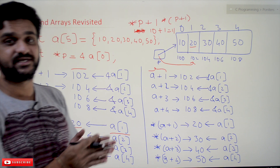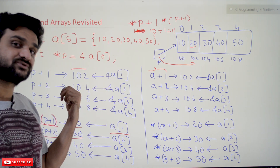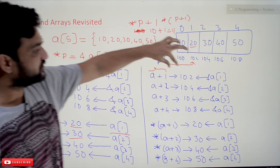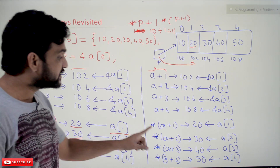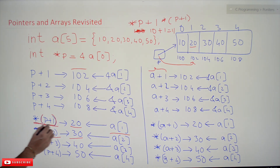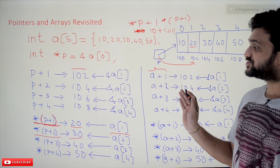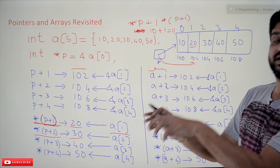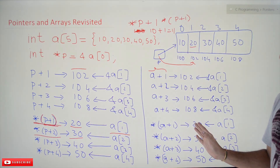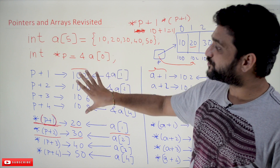The reason pointer arithmetic applies to array names is that an array name is a mnemonic, not a variable — it represents an address. Since a pointer is also an address, all the same logic applies. So a+1 gives address 102, a+2 gives 104, a+3 gives 106. These are the different ways arrays and pointers can be used interchangeably. The only requirement is that the pointer must be pointing to the array.